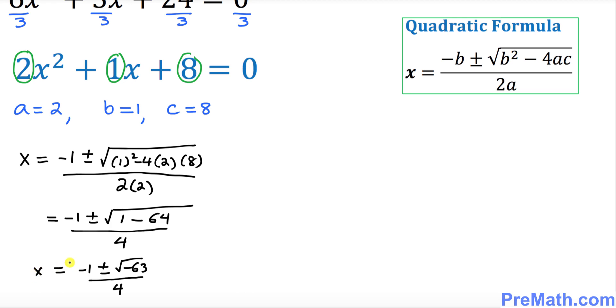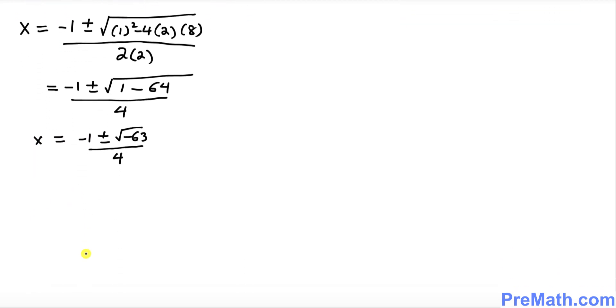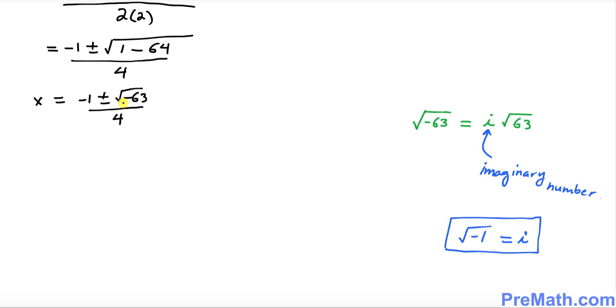This is our x value. So this square root of negative 63 could be written as i times square root of 63, where i is an imaginary number. And once again keep in your mind that i is equal to square root of negative 1. So let's go ahead and simplify: negative 1 plus minus i times square root of 63 divided by 4.